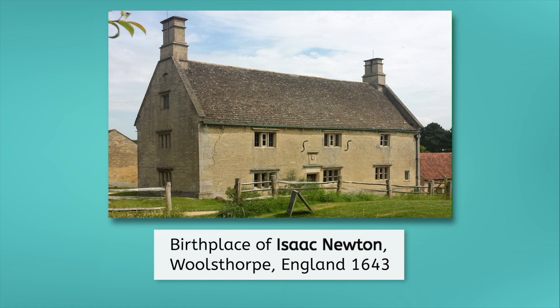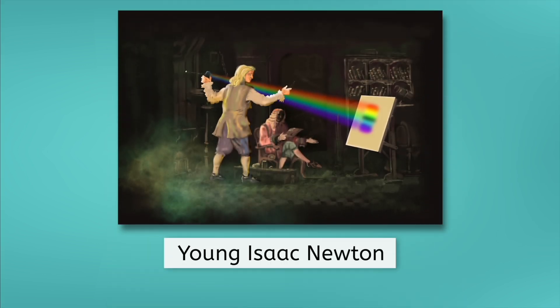Isaac Newton was born in 1643 in Woolsthorpe, England. His father died before he was born and his mother remarried, leaving him to be raised by his grandparents. From an early age, Newton showed an interest in science and mathematics, and he developed a reputation as a gifted student.